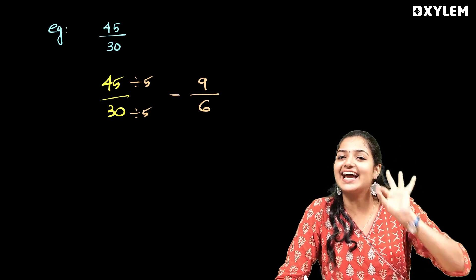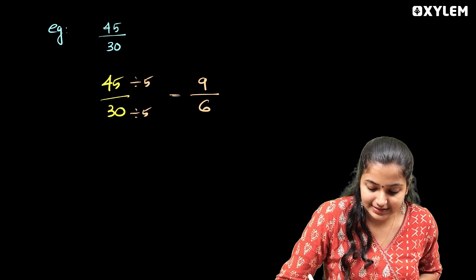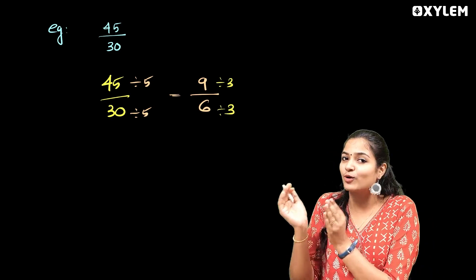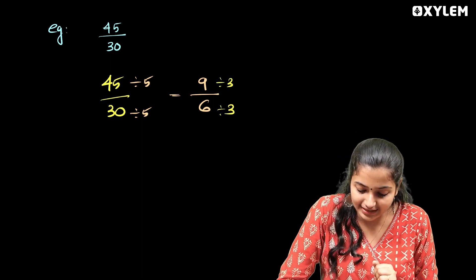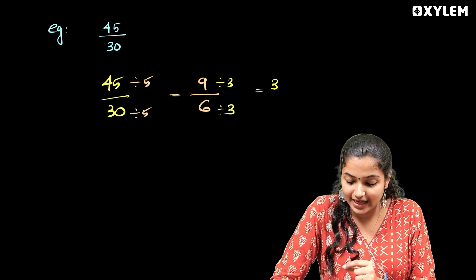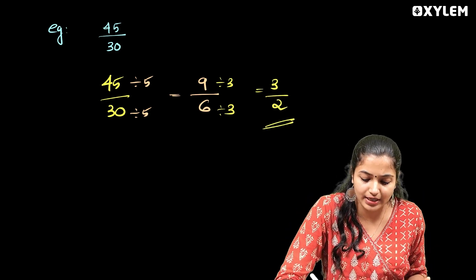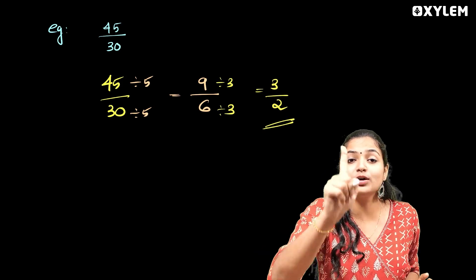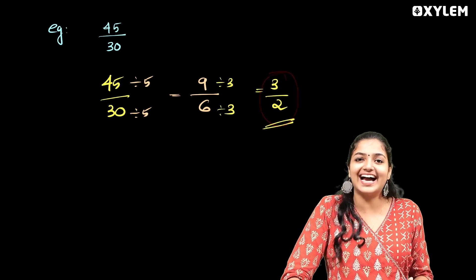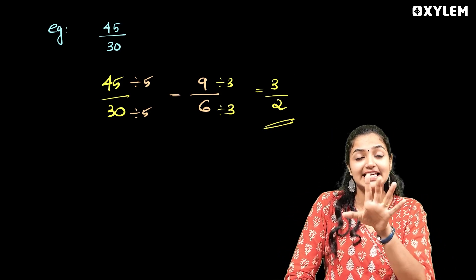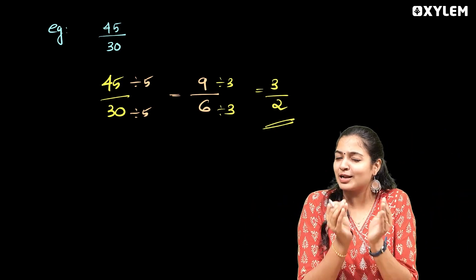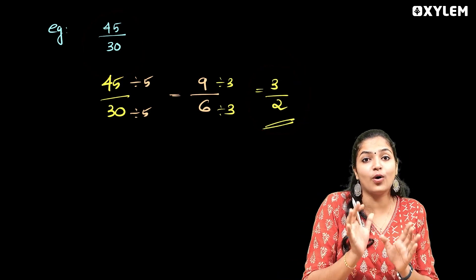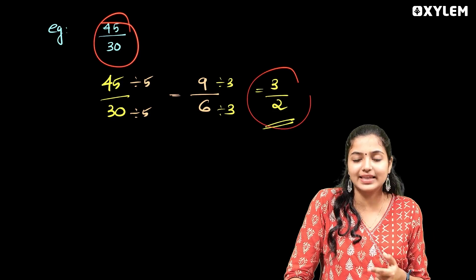How many times does 3 go into 9? Three times. And 3 goes into 6 two times. So we get 3 by 2. This is a rational number. This is the standard form of 45 by 30 — the standard form is 3 by 2.